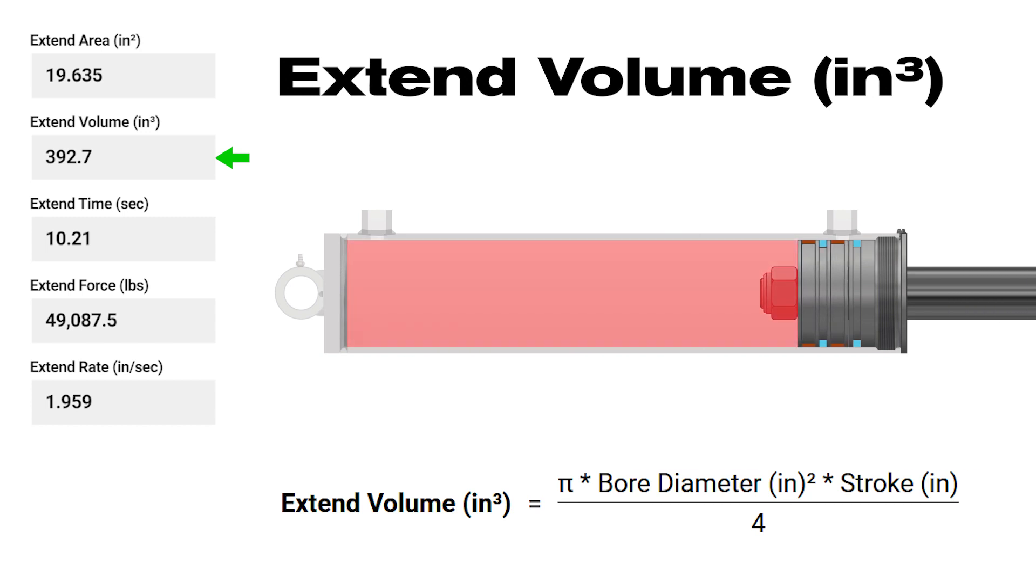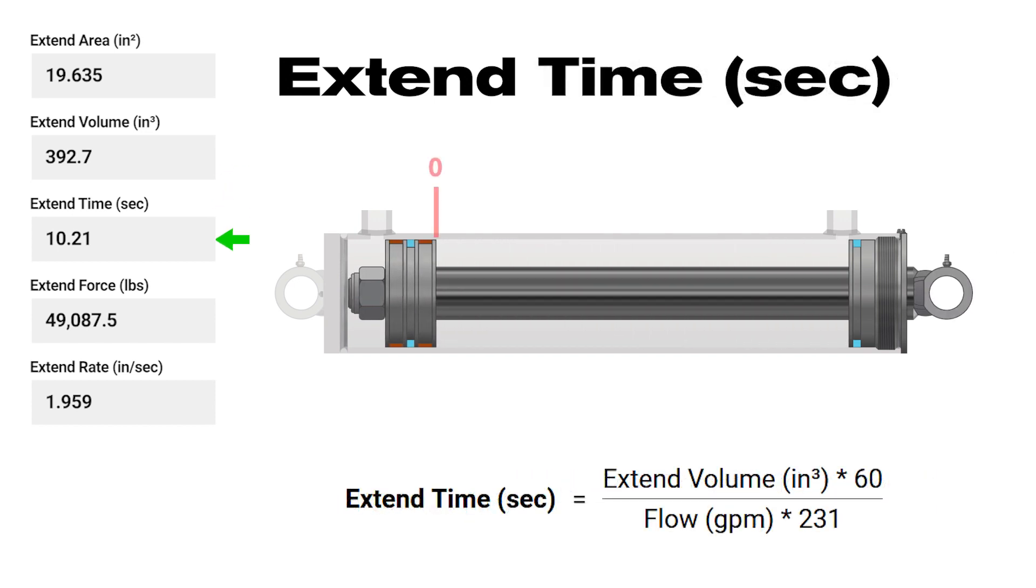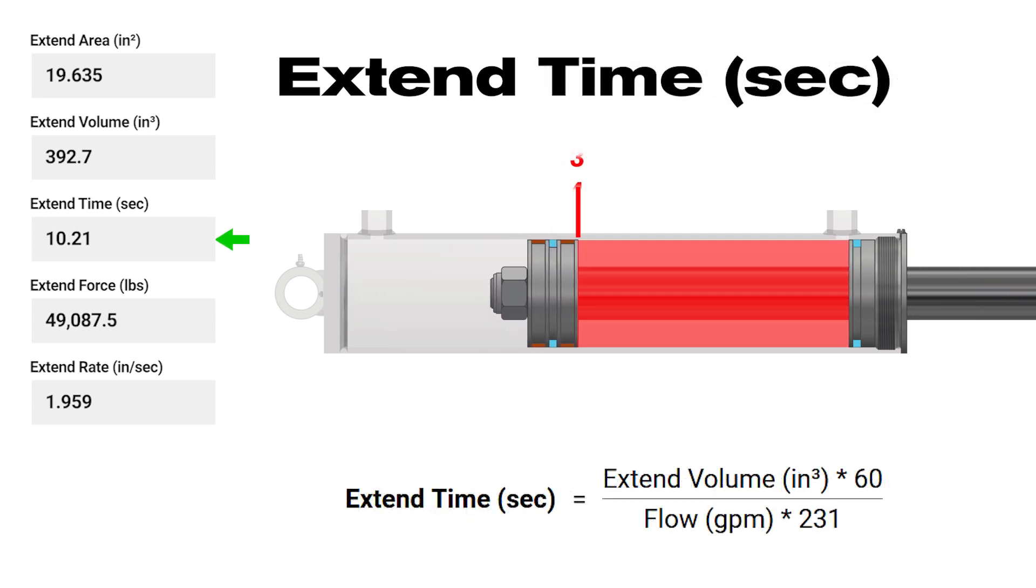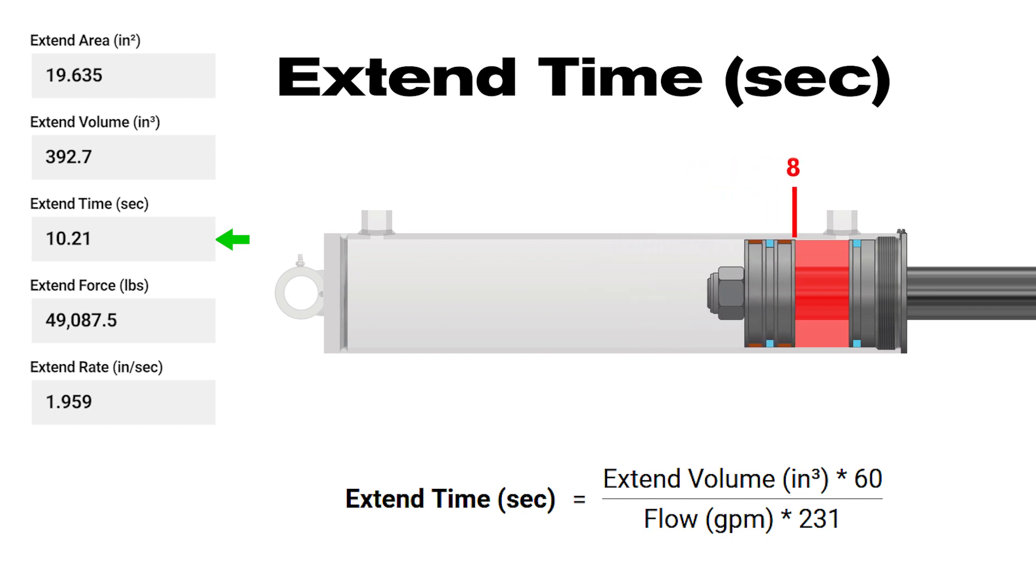Extend volume, measured in cubic inches, is the volume of fluid required to extend the piston the full stroke. Extend time, measured in seconds, is the total time to fully extend the rod from fully retracted to fully extended.